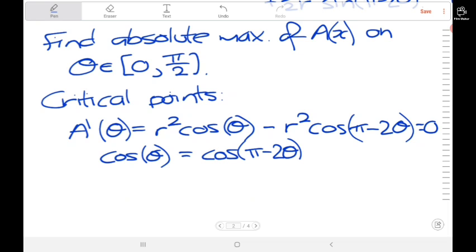Now when does that occur? Well, remember theta is specifically in the interval zero to pi over 2, which means pi minus 2 theta is in an interval zero to pi.